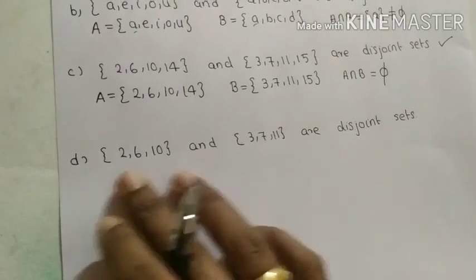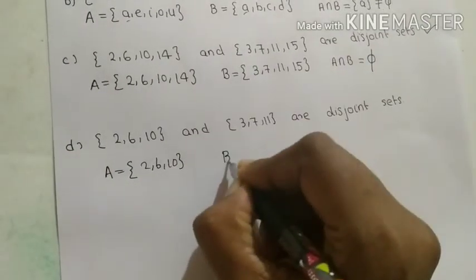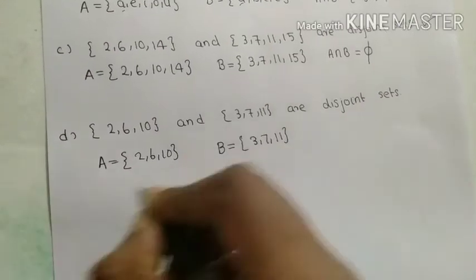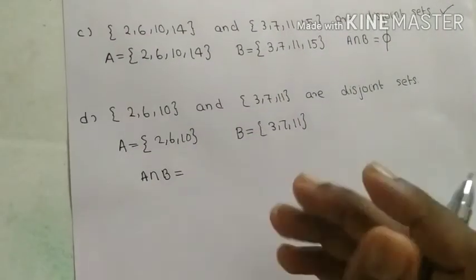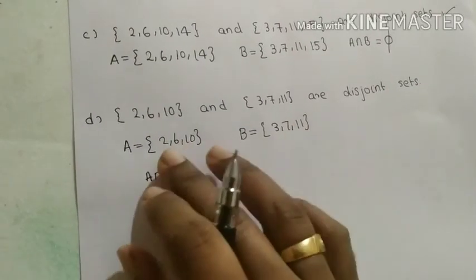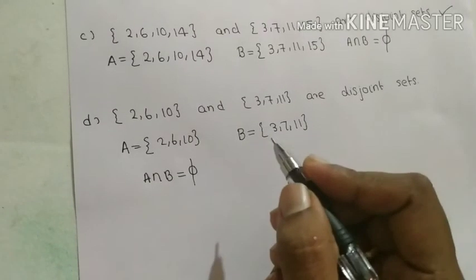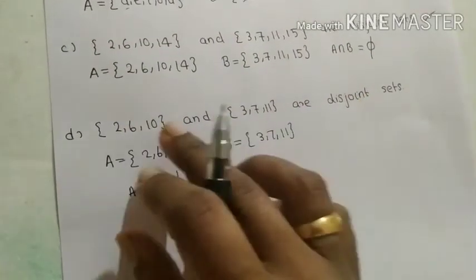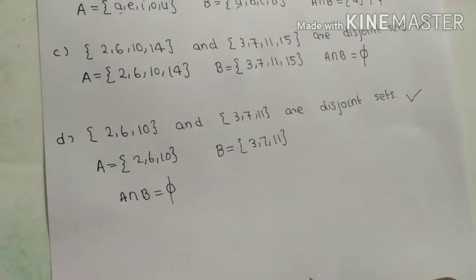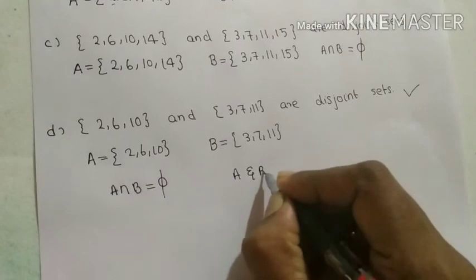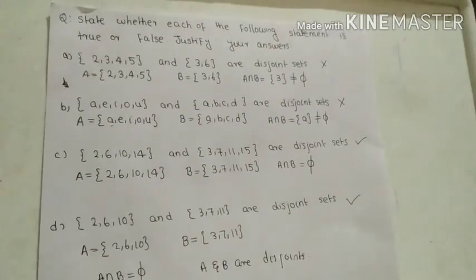Finally, the last question: A = {2, 6, 10} and B = {3, 7, 11}. Observing these two sets, there is no element common in both A and B, so A intersection B equals the null set. Therefore A and B are disjoint sets, and the given statement is true.